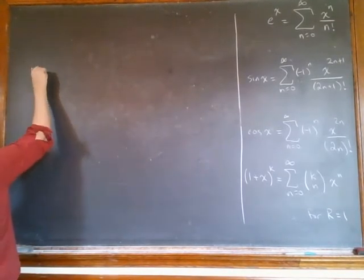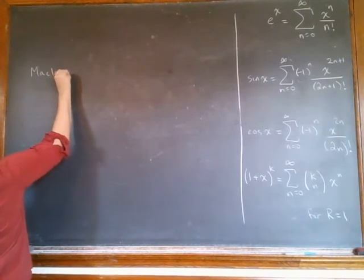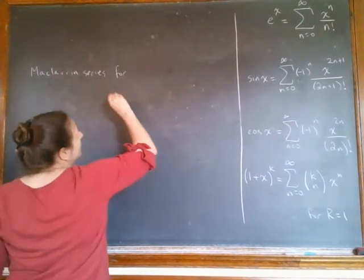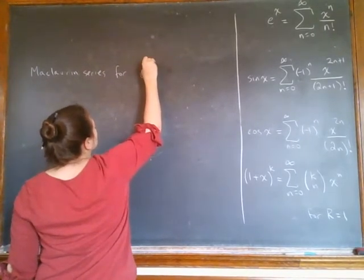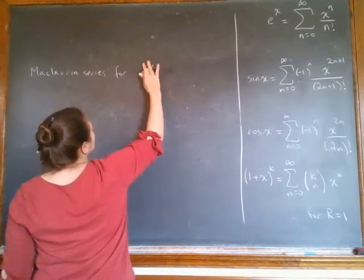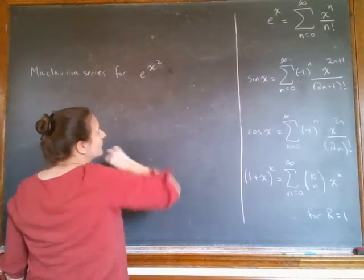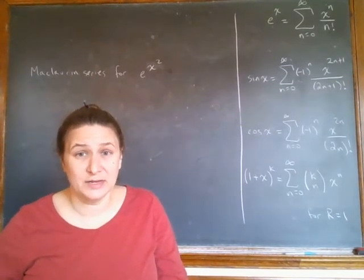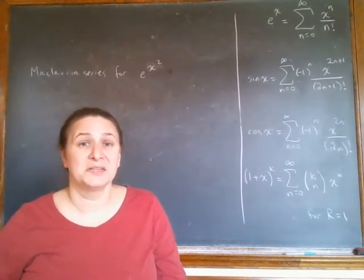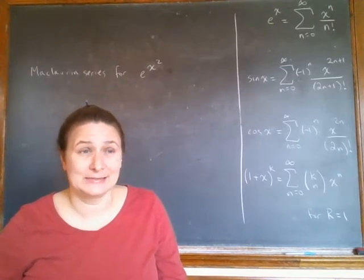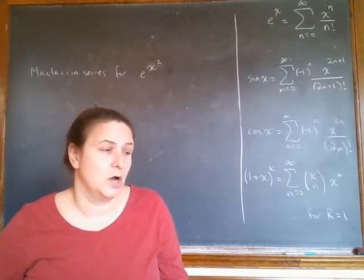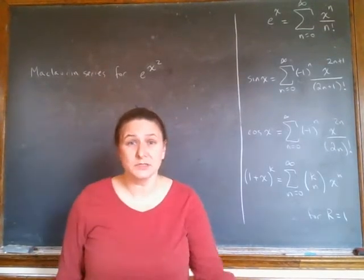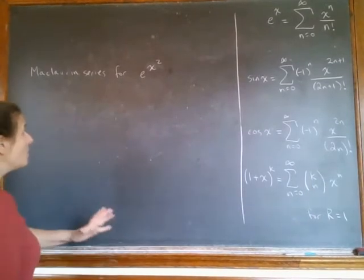For example, if we want to do the Maclaurin series for e to the 4x, actually let's make it even worse, let's make it e to the x squared. Well, for God's sake, you don't want to take successive derivatives of e to the x squared, because the first one is 2x times e to the x squared, and then it's going to be a whole mess of awful product rule trash. I'm just saying, so we don't want to do that.